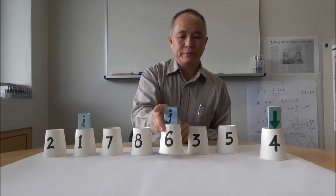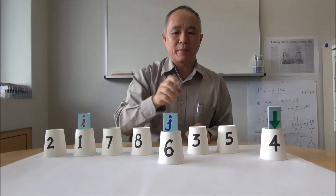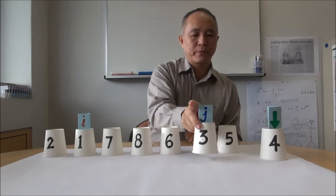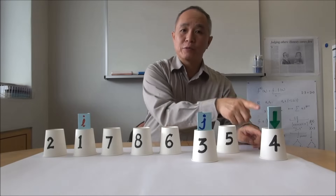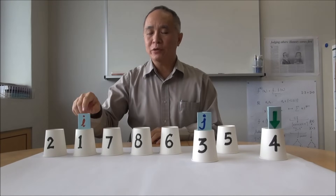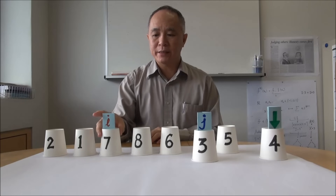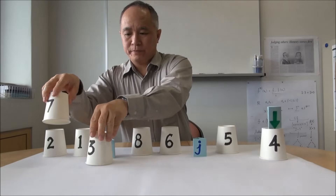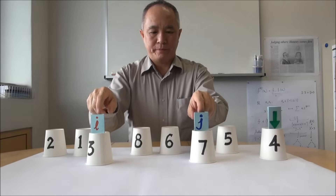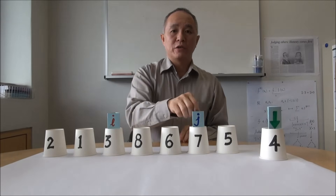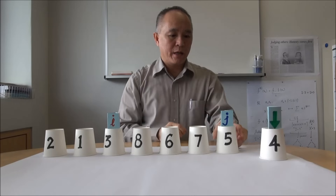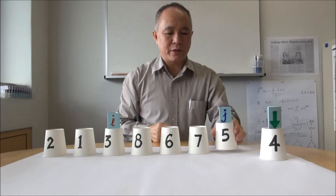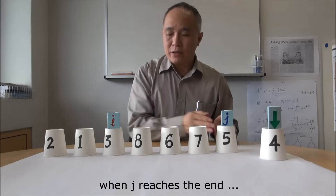We move on. If j is larger than the pivot, we do nothing and move on. Now the jth element is smaller than the pivot, so we take i, increment it, and we do a swap. J moves on, we do a comparison — this element is larger than the pivot, so we do nothing. That's the end of that run.